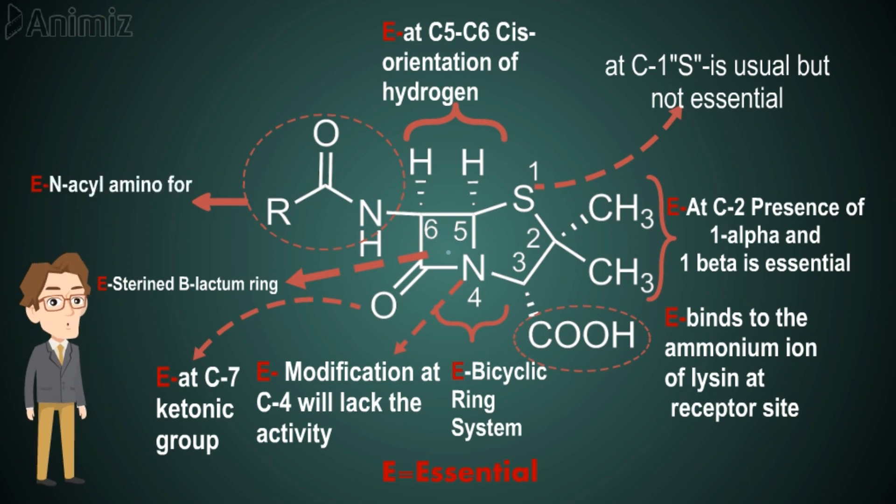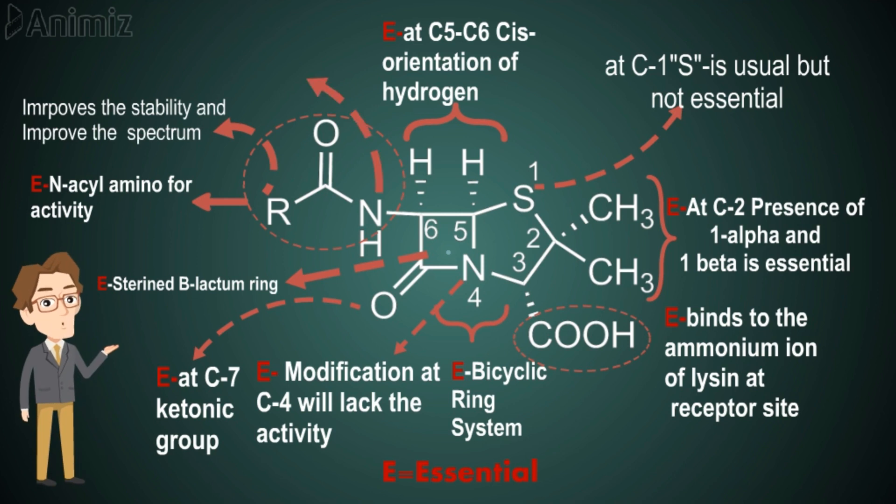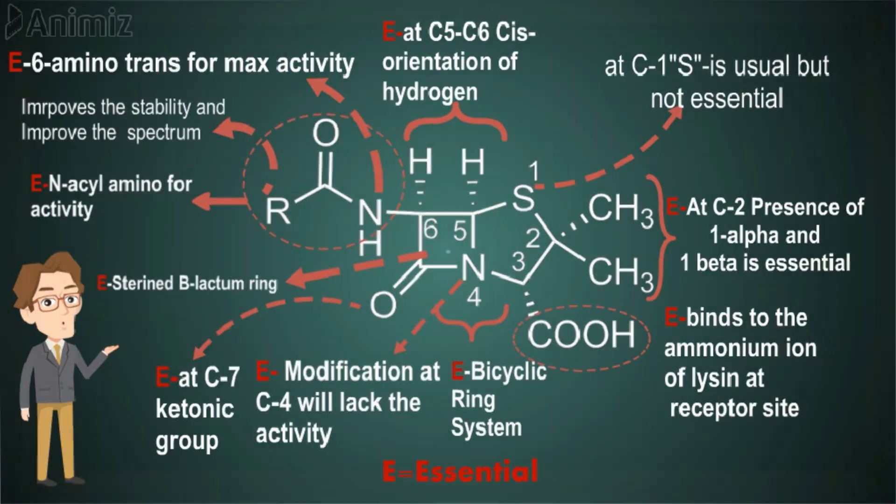The acylamino side chain is essential for activity, where different functional groups at R will improve its stability and spectrum of activity. The nitrogen of the acylamino should be trans stereochemically for showing maximum activity. So this is the SAR of penicillin.